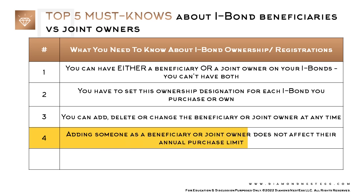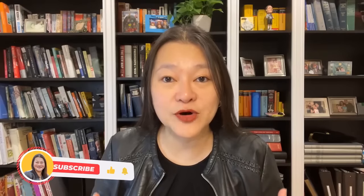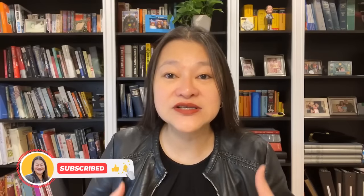Number four: adding someone as a beneficiary or joint owner does not affect their annual purchase limit. The annual purchase limit is attached to the social security number of the primary owner. So if I add my husband as the beneficiary or joint owner on the $10,000 of iBonds I bought this year, he can still go into his own Treasury Direct account and buy $10,000 of iBonds for himself — and he can also name me as the beneficiary or joint owner on his purchase.